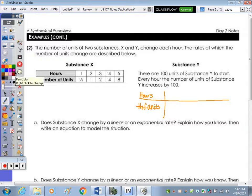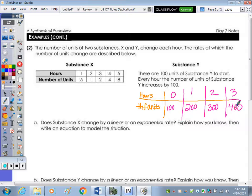So hours and the number of units. So there are 100 units of the substance to start. So at zero hours, we have 100. And then it says every hour, the number of units increases by 100. So for hour one, how many units of the substance do we have? 200. And then hour two, 300. And we could do one more.